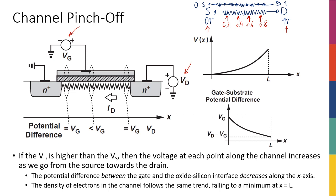So I'm going to talk about a similar concept here: if I apply drain voltage, and if I had a way to measure the voltage at any point along the channel, this voltage was increasing as I traveled from source to drain. Along the x-axis, if L represents the drain position and zero represents the source, then Vx goes from zero to Vd.